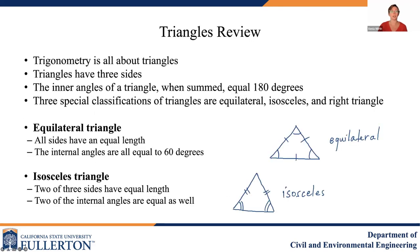Let's start with a review of triangles. Trigonometry is all about triangles. Triangles are a three-sided polygon, and the inner angles of the triangle when summed equal 180 degrees. Three special classifications of triangles include equilateral triangles, isosceles triangles, and right triangles.